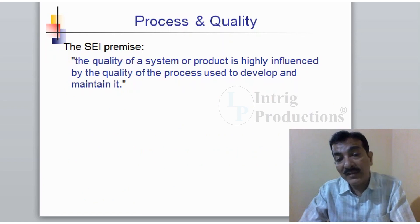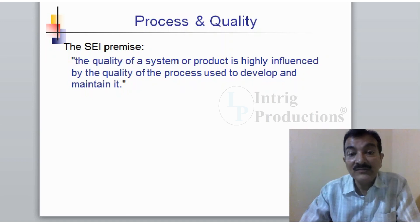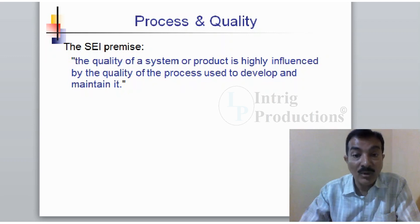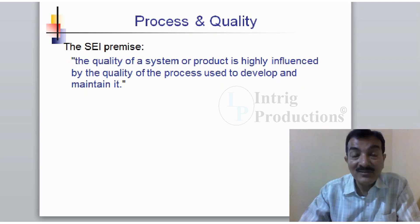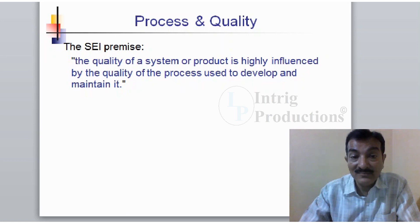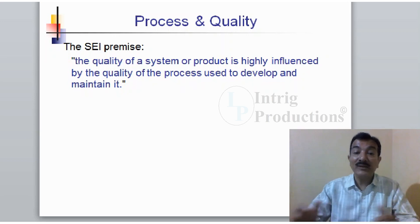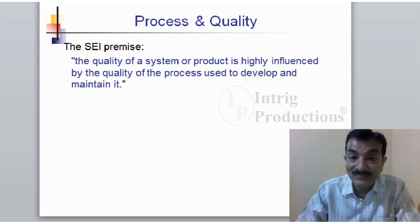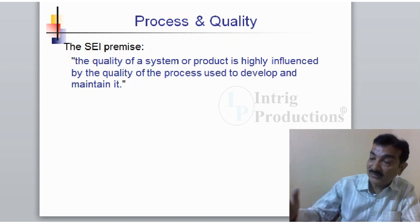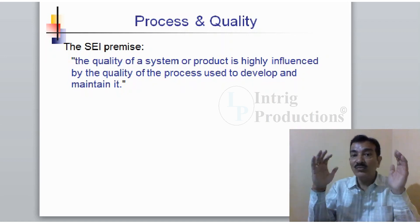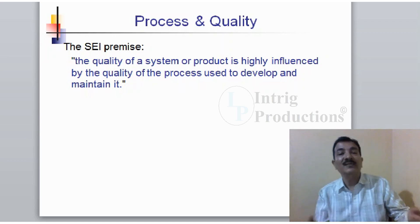The CMMI — actually the SEI — defines the process as follows: "The quality of a system or product is highly influenced by the quality of the process used to develop and maintain it." That is how these process models have come about, because they know that if you are following the process properly, then you would have a better product coming out.